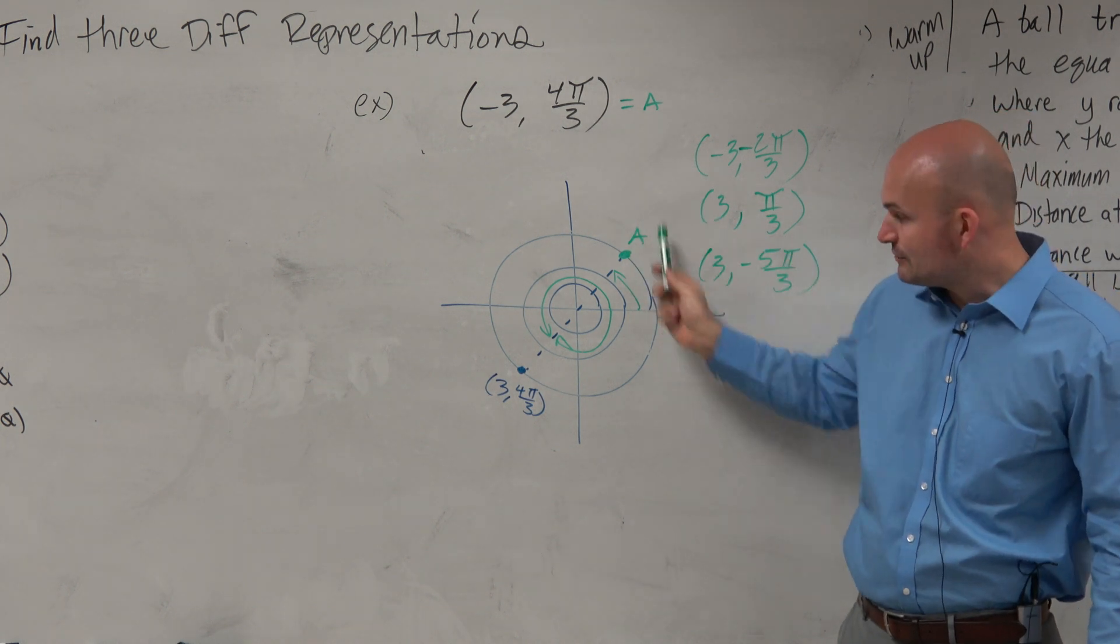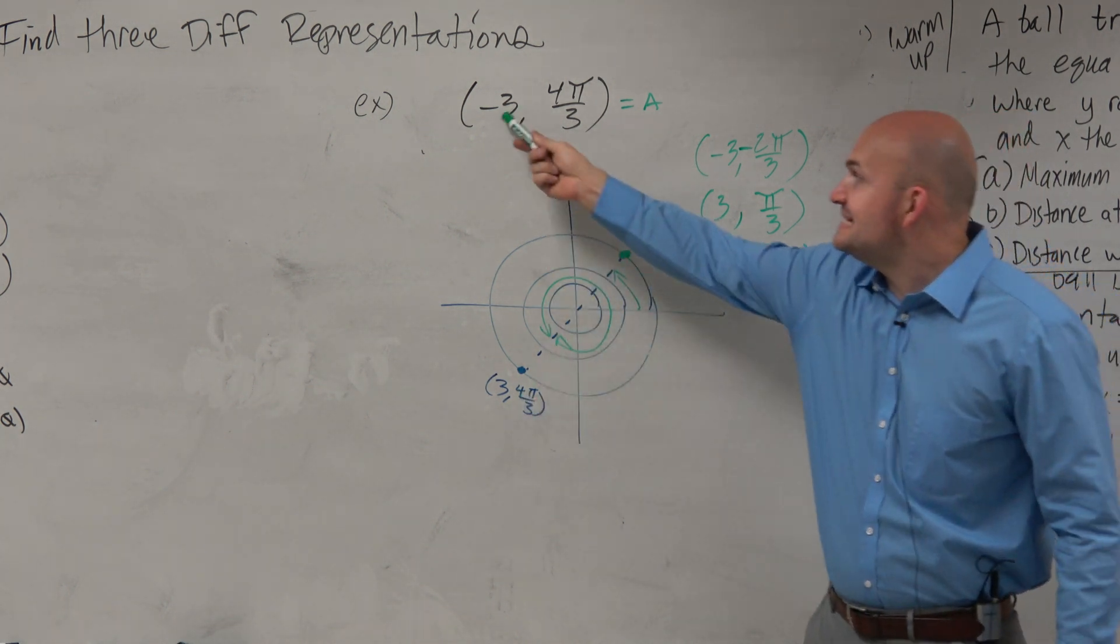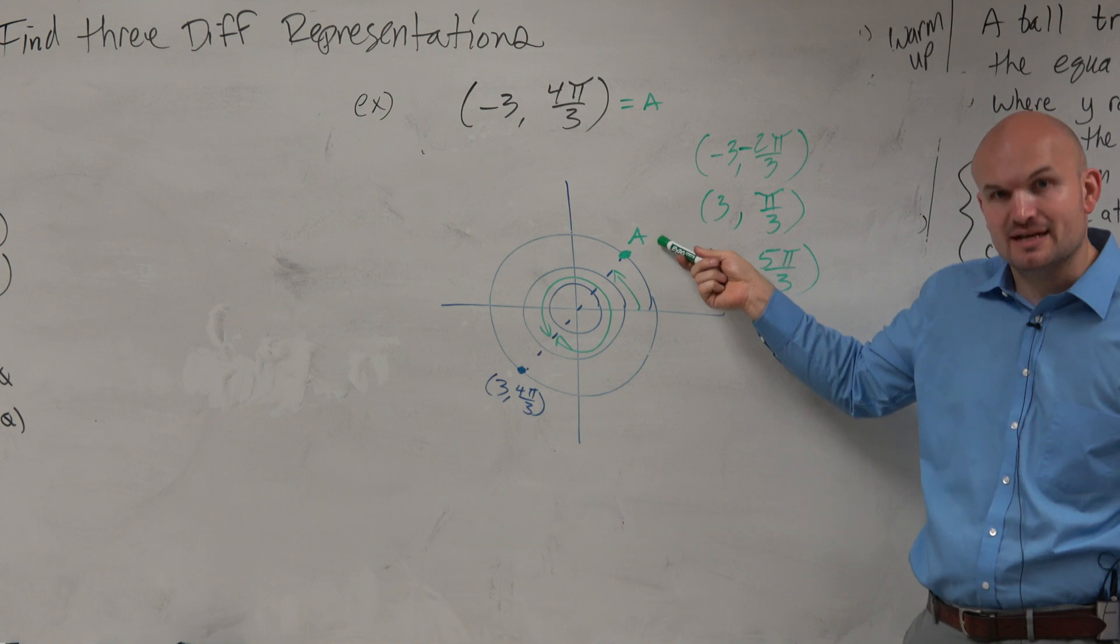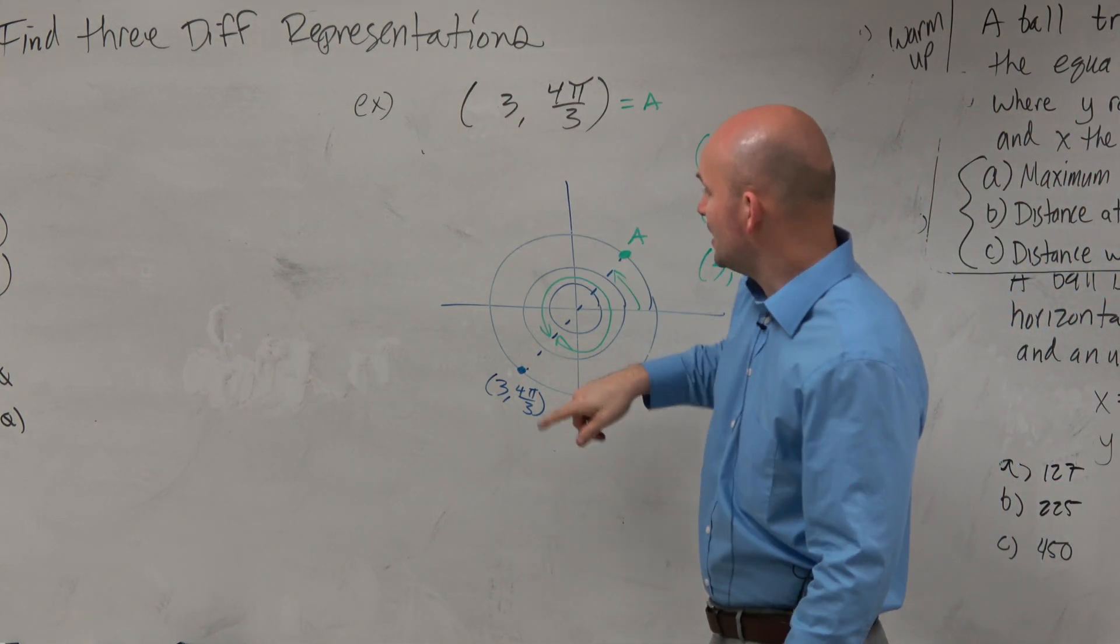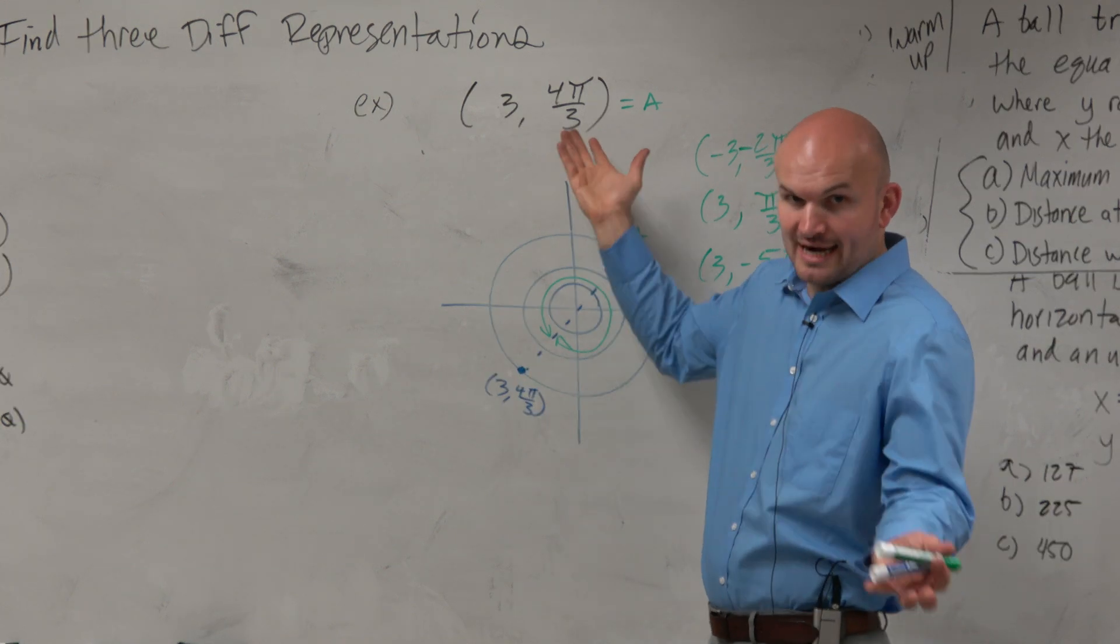I just used this to find this point. Because the angle says 4π over 3, so that's down there. But the negative tells you to reflect it about the origin. That's why you have to follow that negative. If there was no negative there, then that's your answer, done, easy.